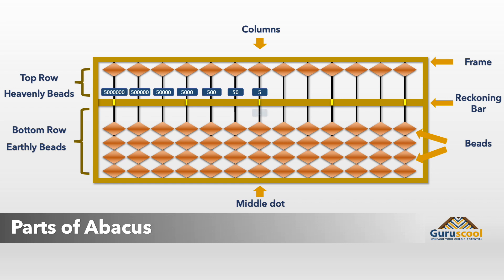The bottom row contains four beads. It has a value of one in the middle dot. The columns towards the left represent values of tens, one hundreds, one thousands, and so on.